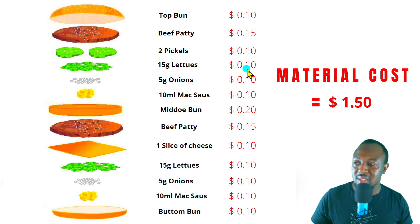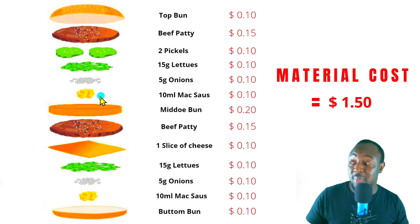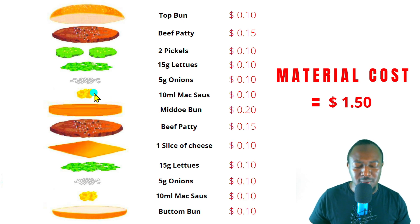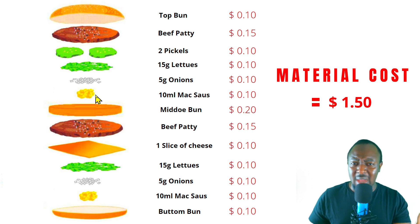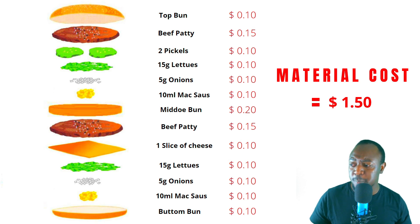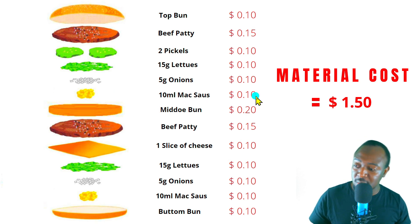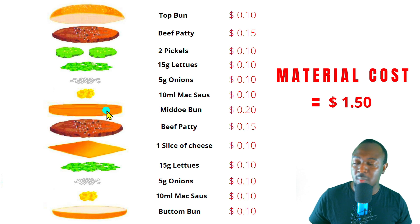Continuing with the ingredients: 15 grams of lettuce at 10 cents, five grams of onions at 10 cents. The Big Mac sauce is really yummy — it's only McDonald's that can make this sauce and they don't want to share the recipe. We have 10 ml of Big Mac sauce at 10 cents, and the middle bun at 20 cents.